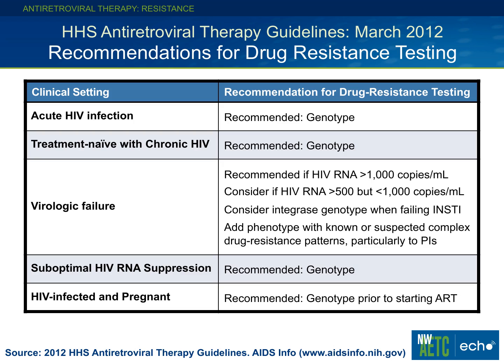The fourth indication is individuals that you start on antiretroviral therapy and they just don't suppress after a reasonable amount of time — say six months to nine months. The last are individuals who are HIV-infected and pregnant. It's recommended in that situation to do a genotype prior to starting antiretroviral therapy. If they're already on therapy and suppressed, obviously there's no reason to do a genotype in that setting.